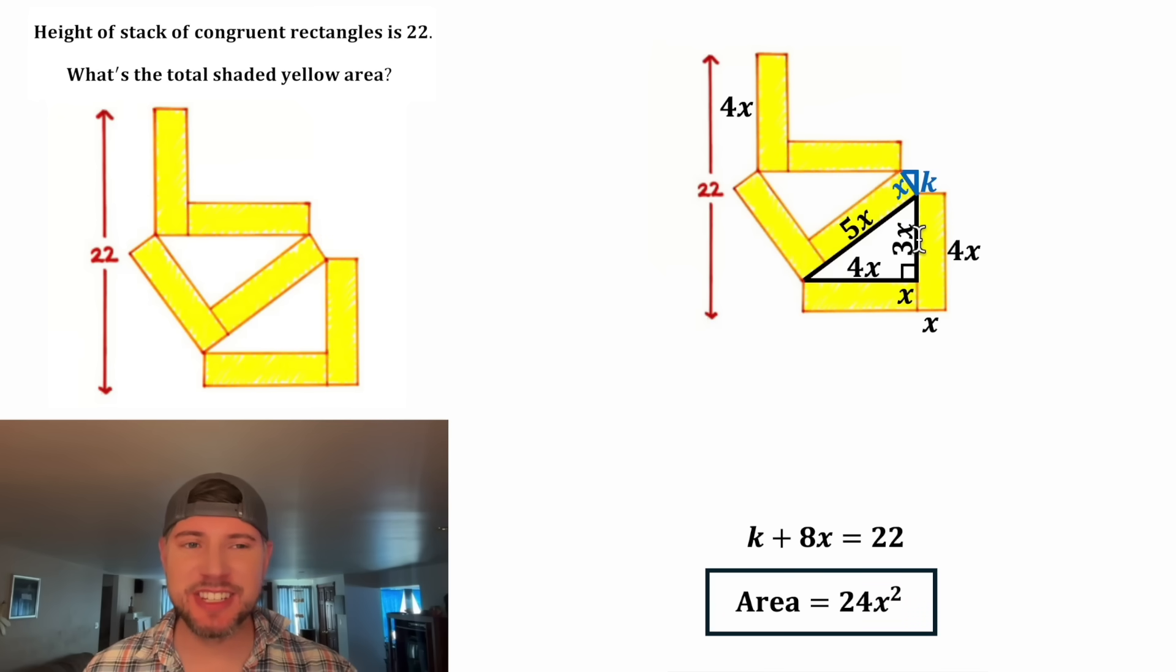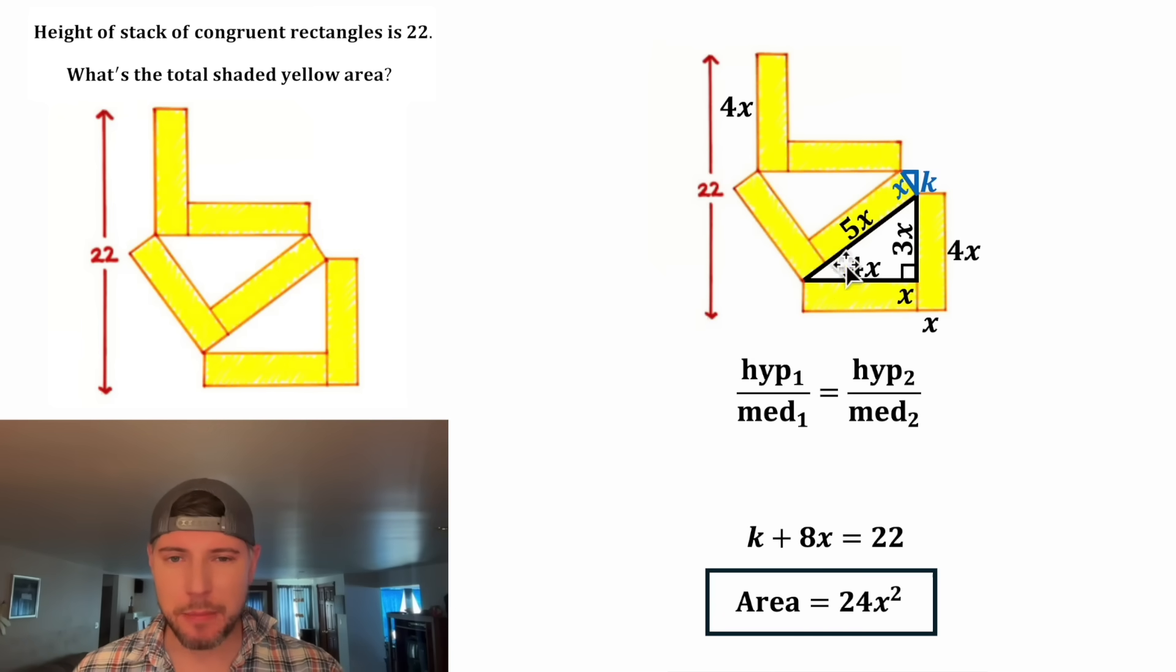Since the two triangles are similar, their sides will be proportional. We can say the ratio of the hypotenuse of the black triangle over the medium side of the black triangle is equal to the ratio of the hypotenuse of the blue triangle over the medium side of the blue triangle. Well, this hypotenuse is 5X and the medium side is 4X, and this hypotenuse is X and the medium side is K.